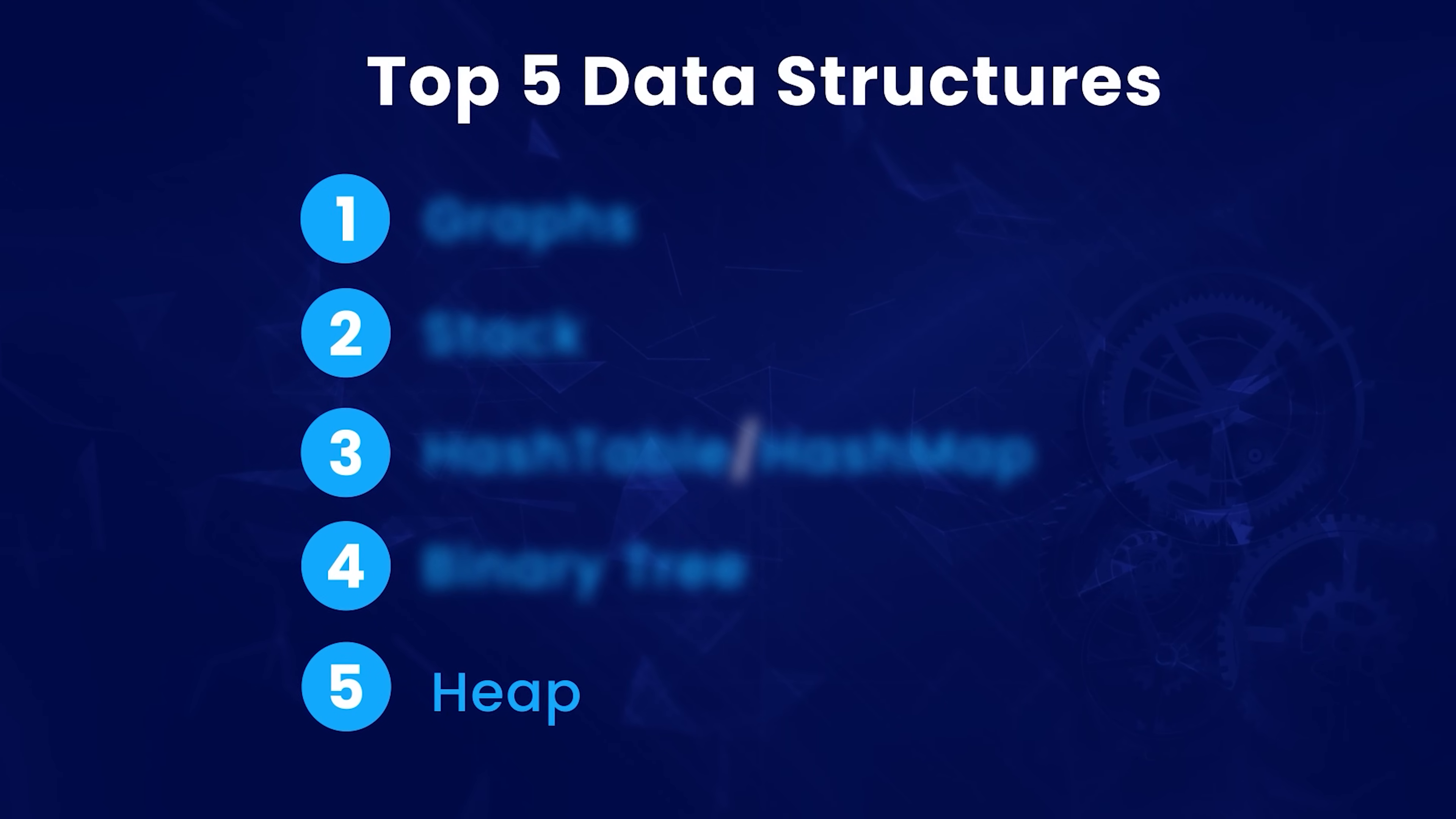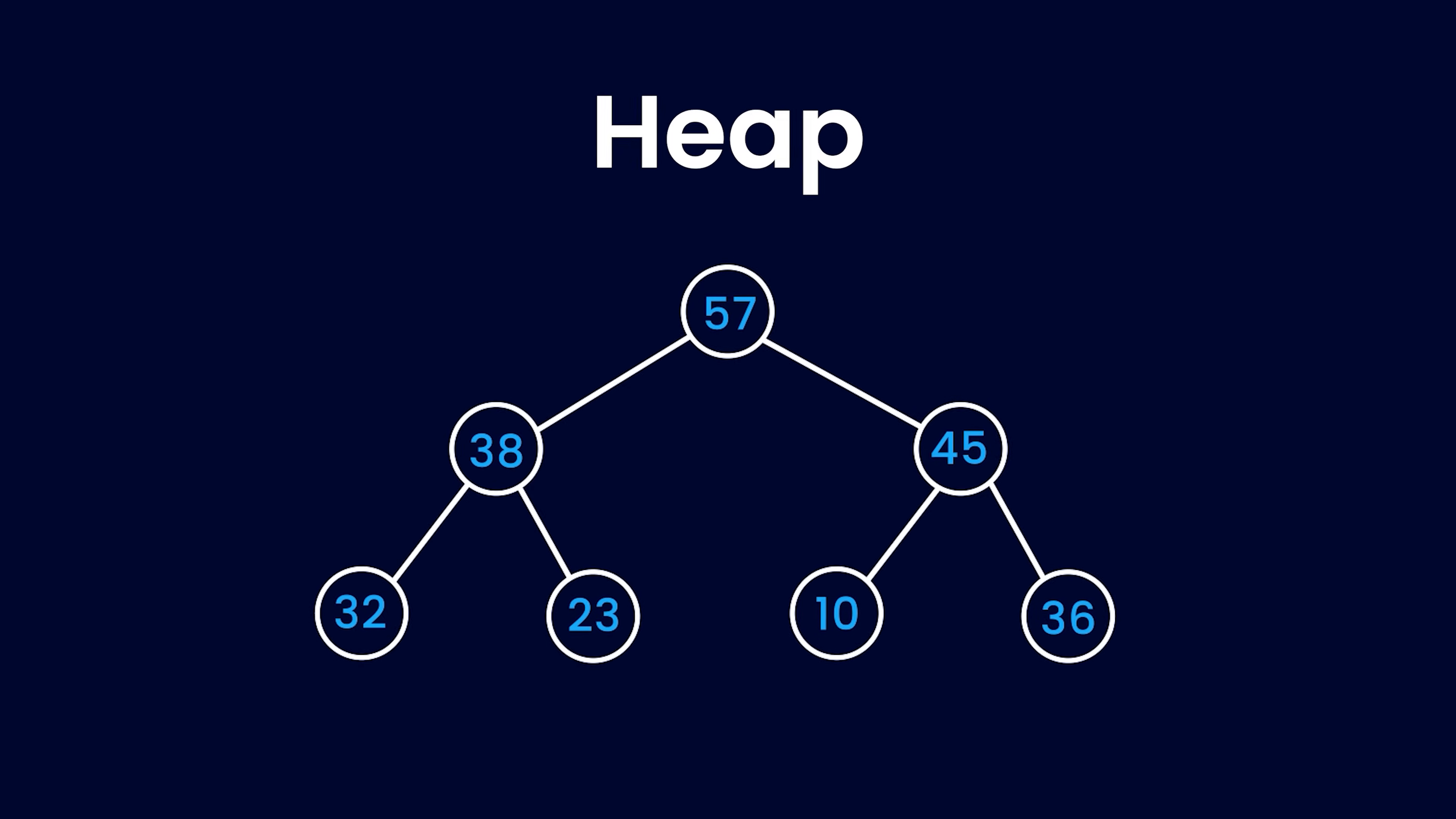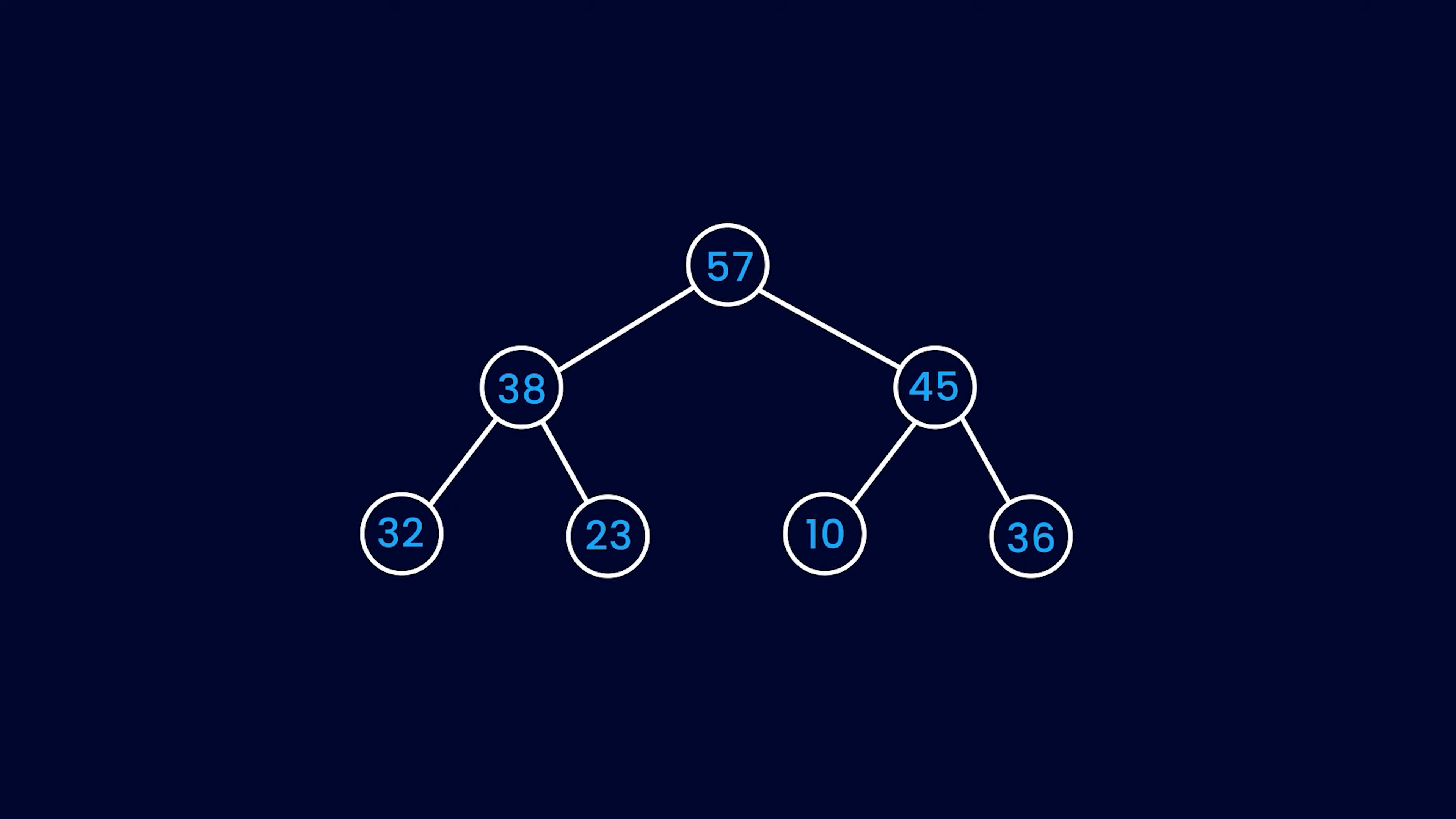At number 5, we have Heap. Heap is a tree-based data structure that is used to store a partially sorted set of elements. But what does that even mean? Let's examine this tree-like structure closely. If you pick any element or node on the tree, it's going to be greater than or equal to both of its children. This kind of heap is called a max heap. What this means is that the root or the topmost node of the tree is always going to be the maximum of all the elements.